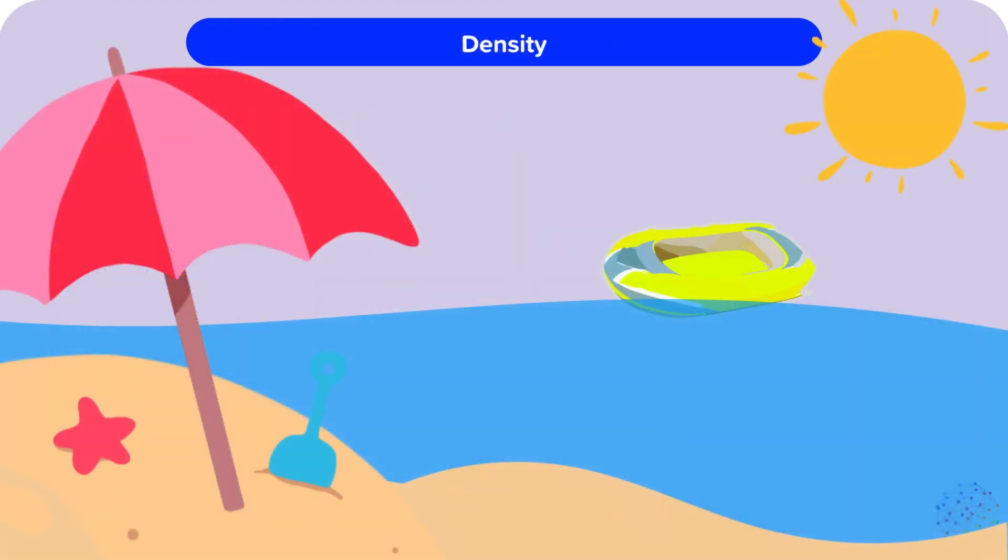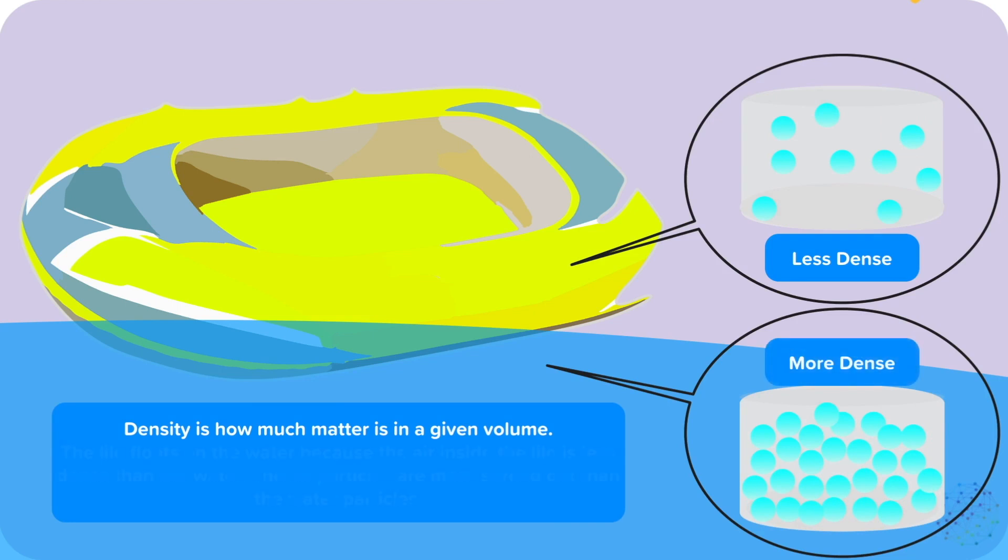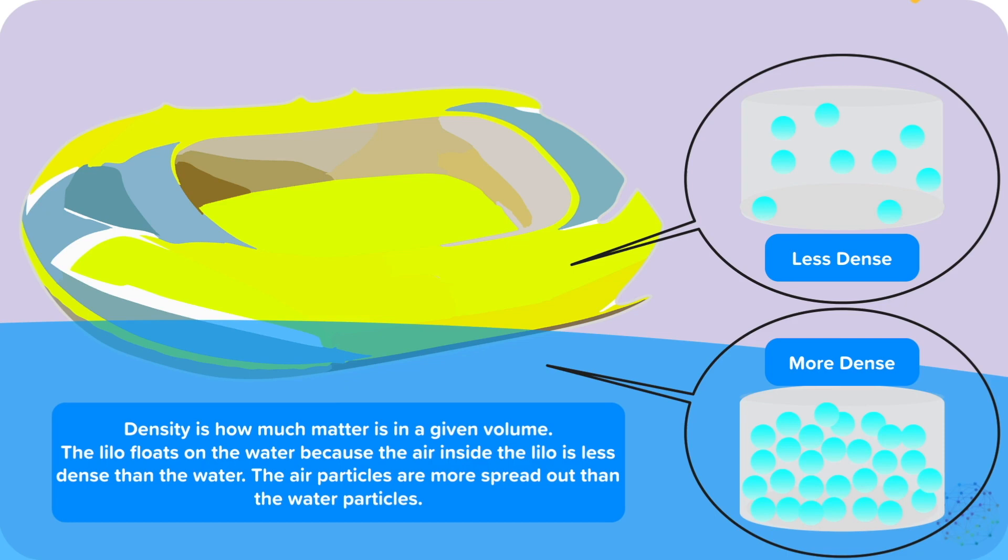Density. If you push a lilo down in a swimming pool and let it go, it will float back up to the top. This is because it is less dense than the water. Density is how much matter is in a given volume. Air in the lilo is less dense than the water in the sea, because the particles are more spread out. This makes the lilo float on the water.